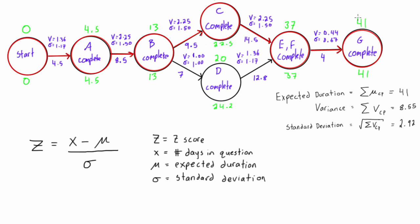For example, in the previous video we looked at this project that has an expected duration of 41 days, and they said what's the probability of this happening in less than 38 days. Then you give a percentage which is the probability of that happening.